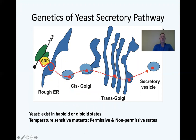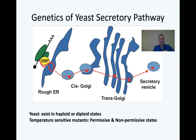We'll look at the genetics of the yeast secretory pathway. You need to know genetics — dominance, recessiveness, all of it — and apply it to various scenarios. We'll take yeast, which exist in haploid or diploid states, and look at temperature-sensitive mutants, which define permissive and non-permissive states. At a permissive temperature like room temperature, the gene is normal; if you raise the temperature, the gene becomes mutant — likely because protein folding is disrupted when hydrogen bonding can't occur at higher temperatures. Temperature-sensitive mutants are a big deal.